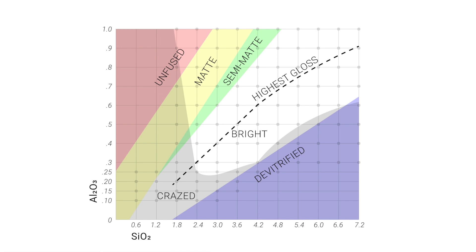These regions are the bright region in the middle, the semi-matte region, the matte region, the unfused and de-vitrified regions, as well as the crazed region.